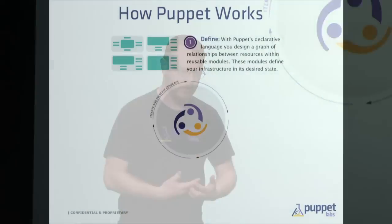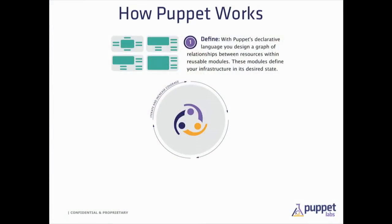So how Puppet works: you define your infrastructure in a sense that you're actually trying to describe what the end state is going to be. You're not imperatively trying to develop a set of actions that must happen for something to actually be running. You're actually trying to say that you want an Apache server and you should ensure that it looks this way. We have a basic declarative DSL that does that process.